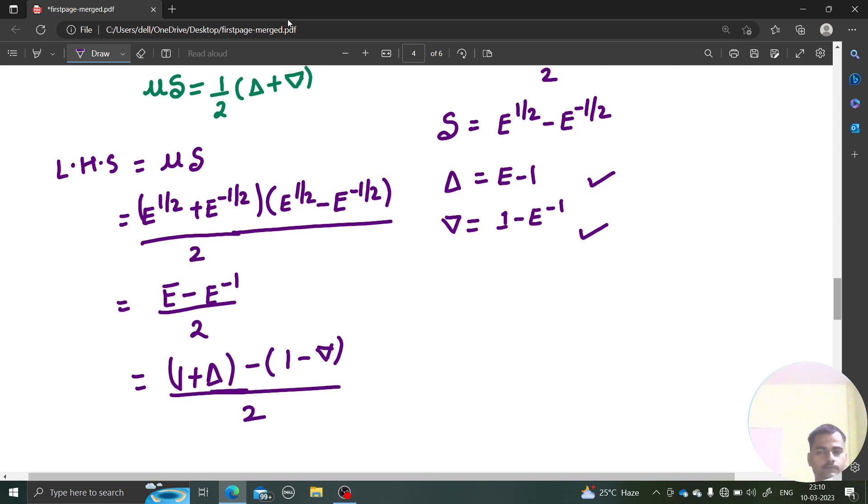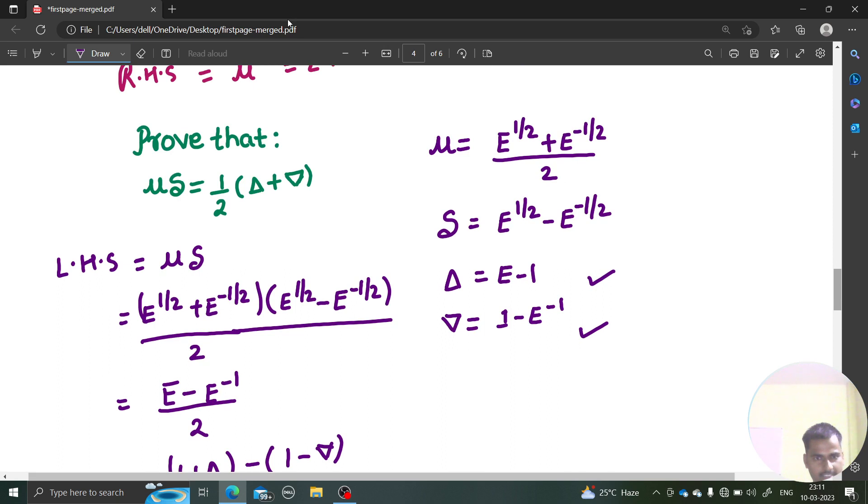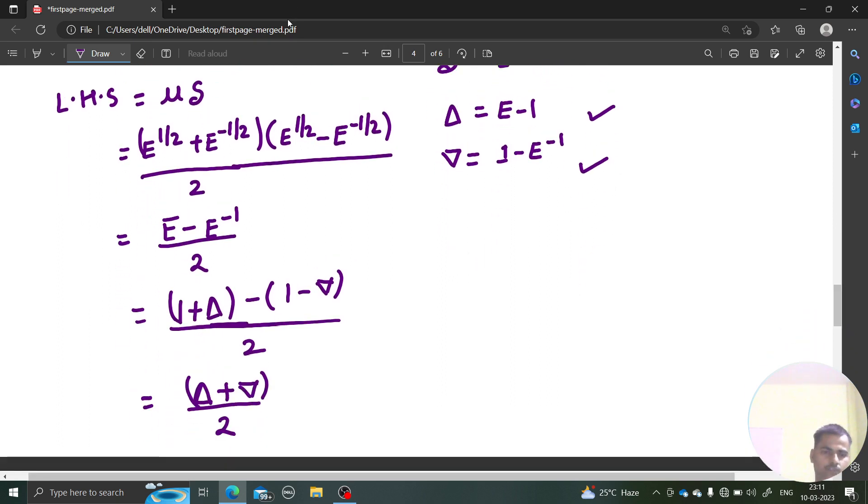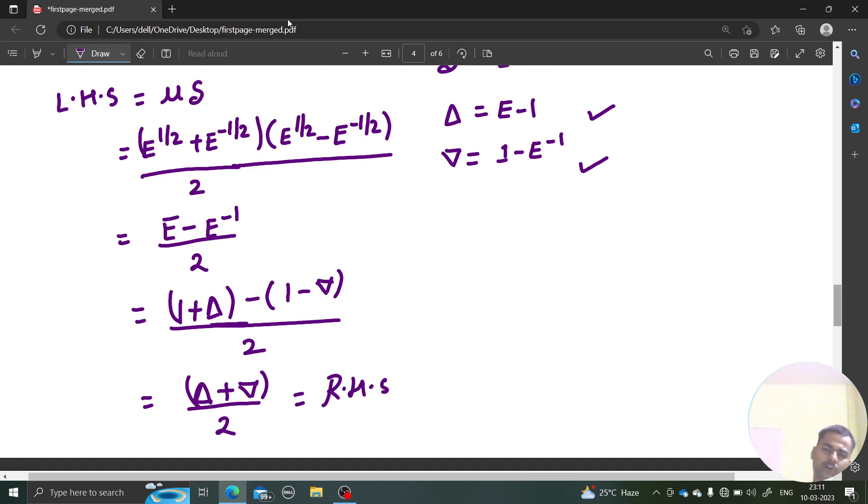Let's simplify this further. You are going to get 1 and 1 will cancel, minus minus plus. This will be simply forward difference operator plus backward difference operator divided by 2, which is your RHS. That's what we needed to prove. We started with LHS, we ended up on RHS.